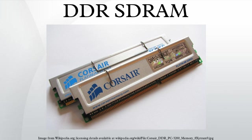DDR was superseded by DDR2-SDRAM, which had modifications for higher clock frequency and again double throughput, but operates on the same principle as DDR. Competing with DDR2 was Rambus XDR DRAM; DDR2 dominated due to cost and support factors.